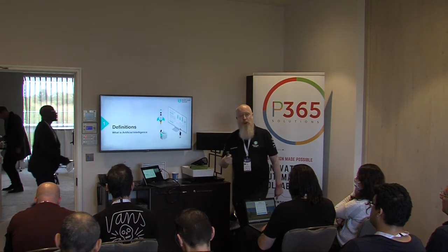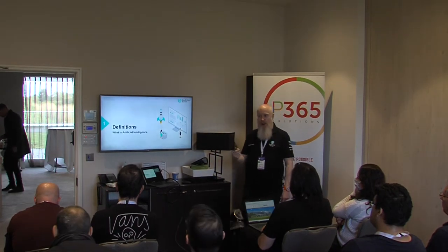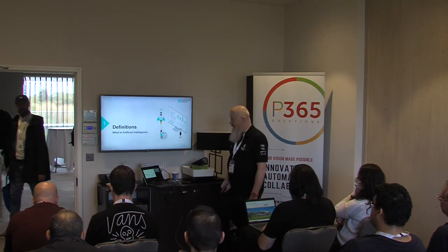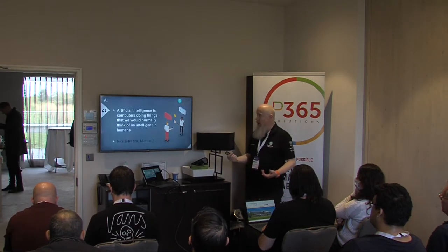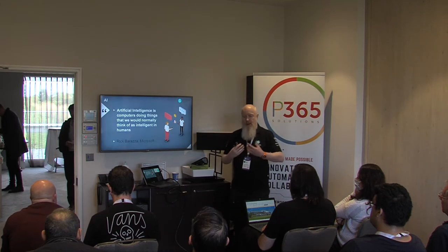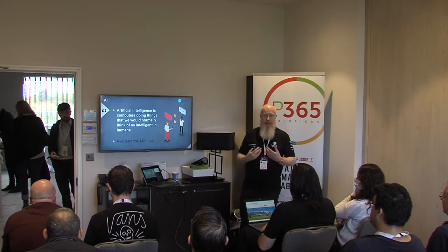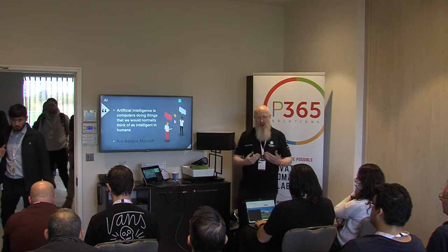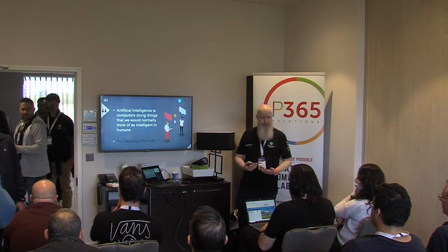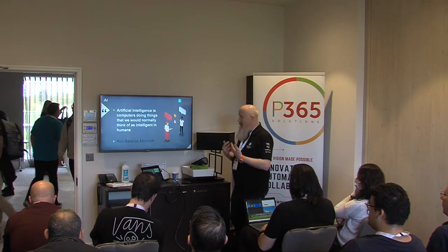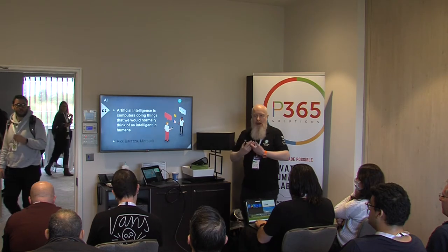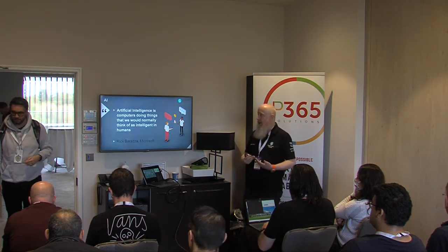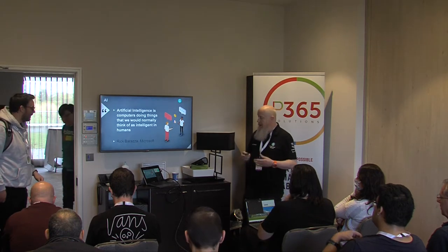First of all, I'm going to try to define what artificial intelligence is, because this is one of the key things — what do we mean by artificial intelligence? I like this quote: it's about getting computers, or an app, to do things that we would think of as intelligent. Not just do a human thing, because humans do dumb things. It's about having behaviour that mirrors what a human does, especially at the higher level of intelligence.